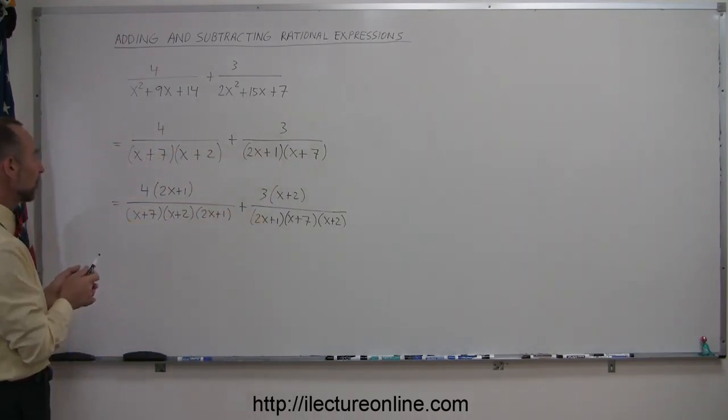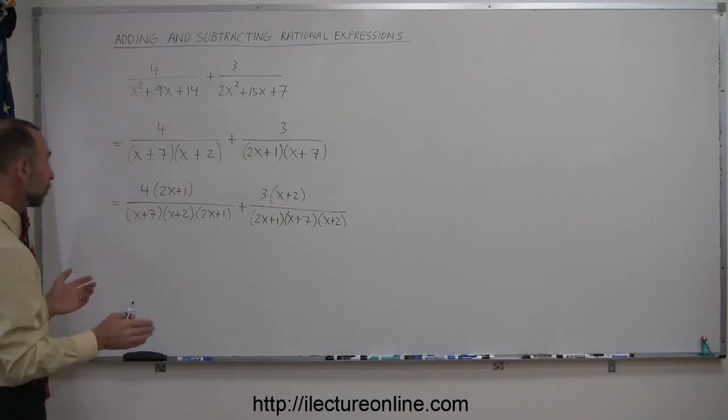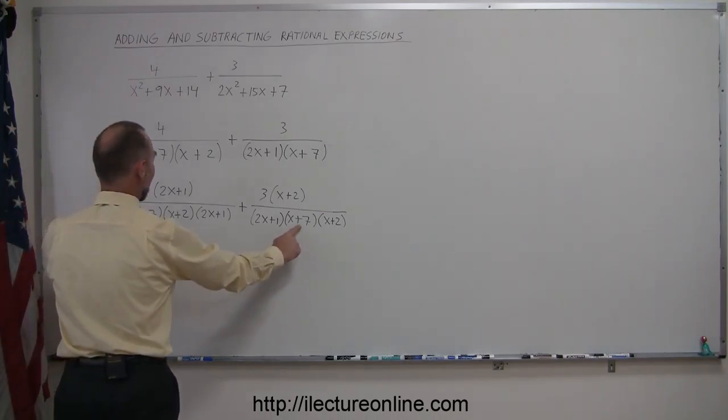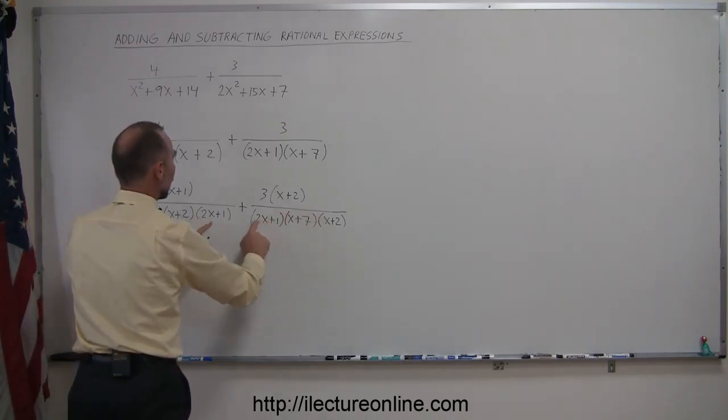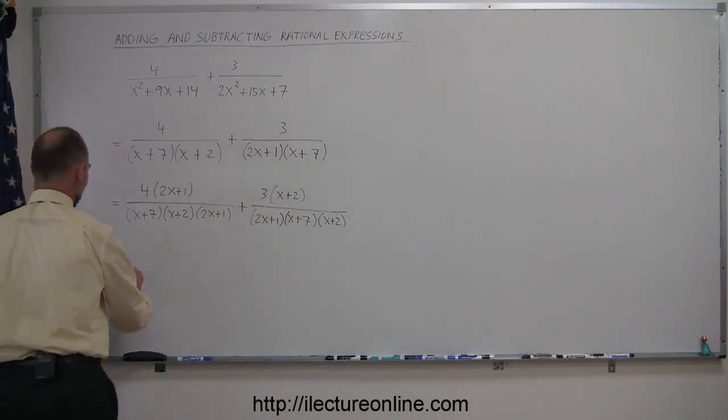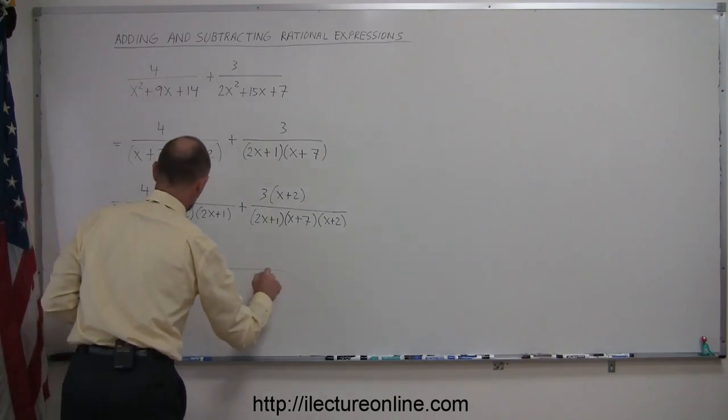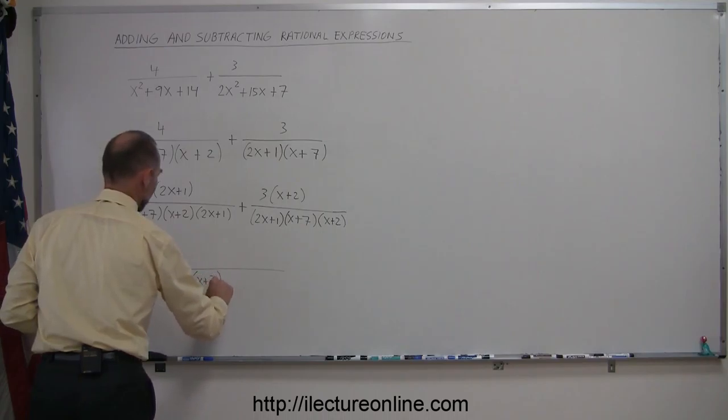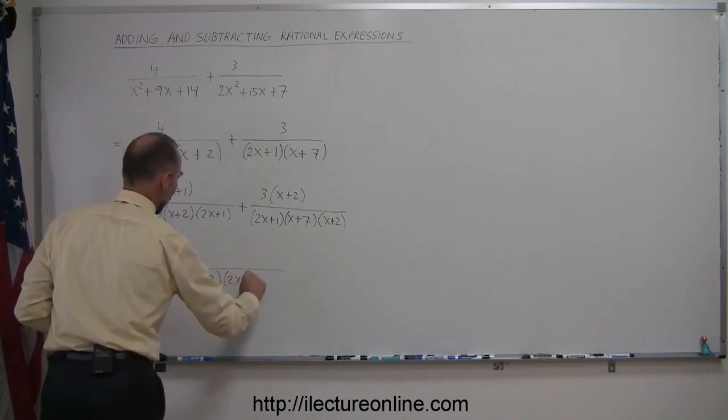Now you can see that the two denominators are the same. They don't have the same order, but that doesn't matter, because with multiplication it doesn't matter what order they have. I have an x plus 7, I have an x plus 2, and I have a 2x plus 1 in each of the two denominators, which means I can write the whole addition on one single denominator, so this is equal to x plus 7 times x plus 2 times 2x plus 1.